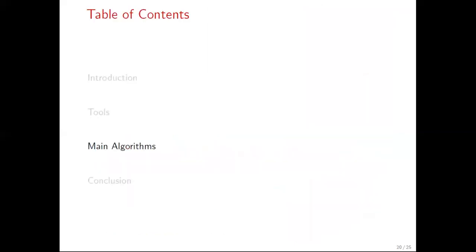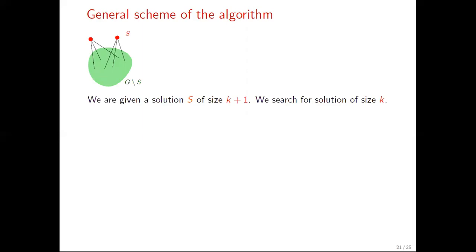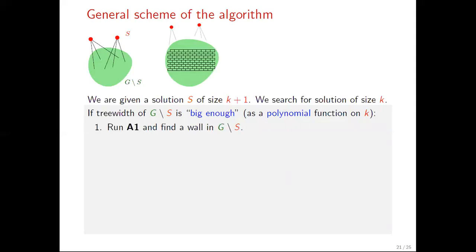Now, let's describe our main algorithms. We begin with the general case. Here, we are given a graph G, and as we mentioned earlier, under the light of iterative compression technique, we are given a vertex set S, a solution of size k+1, the red vertices in the figure above, and we search for a solution of size k. Our aim is to obtain a graph of bounded treewidth. As long as the treewidth of G minus S is big enough as a polynomial function in k, first, we run algorithm A1 and find a wall in G minus S. Then, using this wall, we run algorithm A2 and find a flat wall of G minus S with a set of few vertices A. So, where we end up is at a flat wall and several flying, let's say, vertices, the vertices of S and A, depicted in red and yellow above.